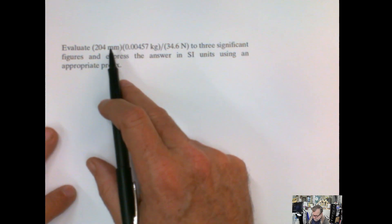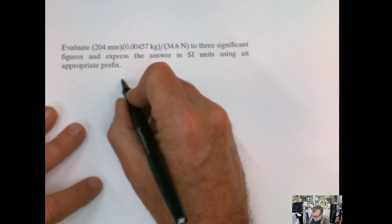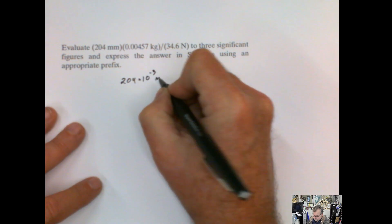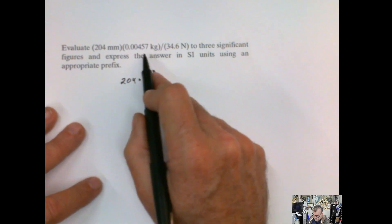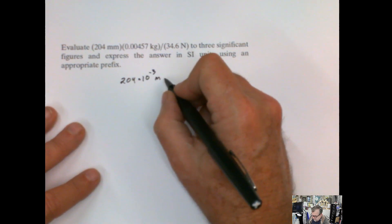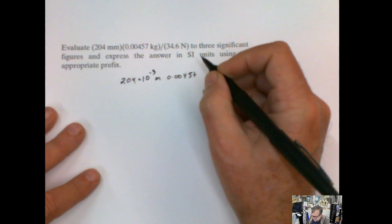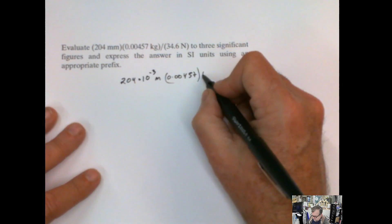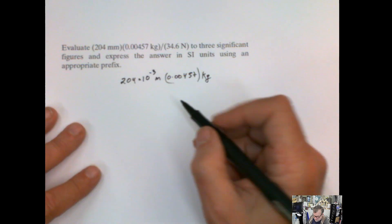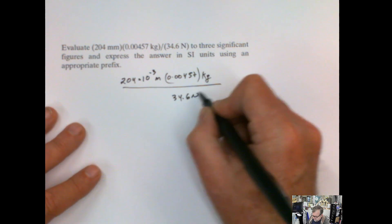OK, let's put everything in the root units for starting. 204 times millimeters, 10 to the negative 3 meters. I'm going to leave this as kilogram, because kilogram is considered the base unit for SI system for mass, multiplied by 0.00457. I'm going to keep the number like that in kilograms. And then newton, also I'm going to keep newton as newton. I'm going to divide it by 34.6 newton.